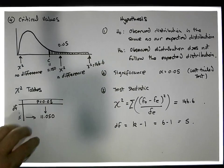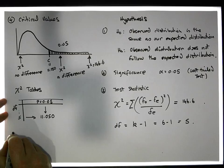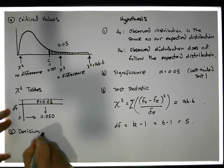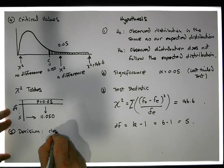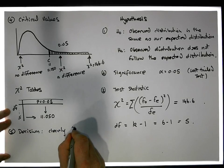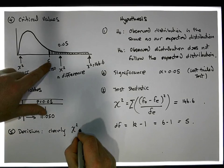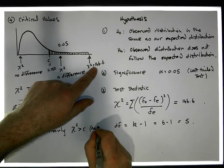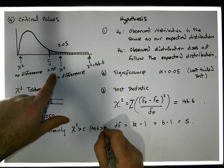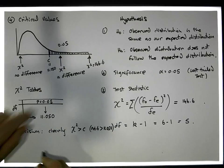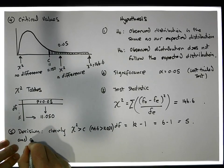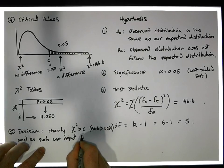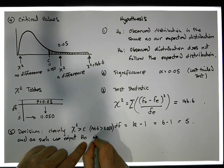Our decision: clearly, our test statistic, our chi-squared value, is bigger than our critical value. What I mean by that is 146.6 is bigger than 11.050. As such, we reject H0 at the five percent level of significance.